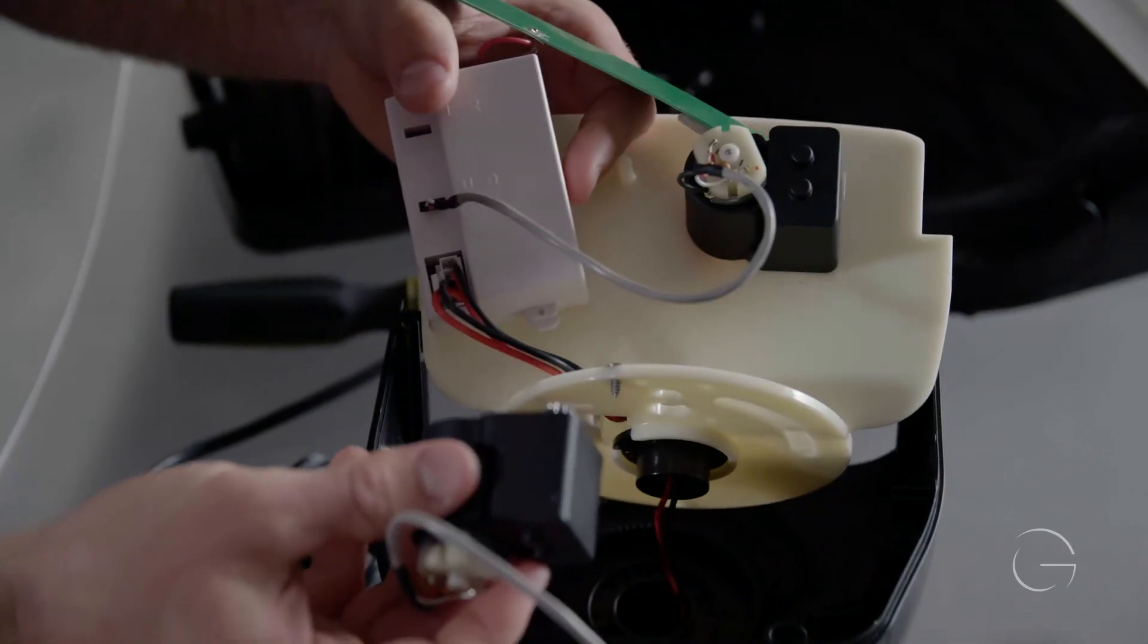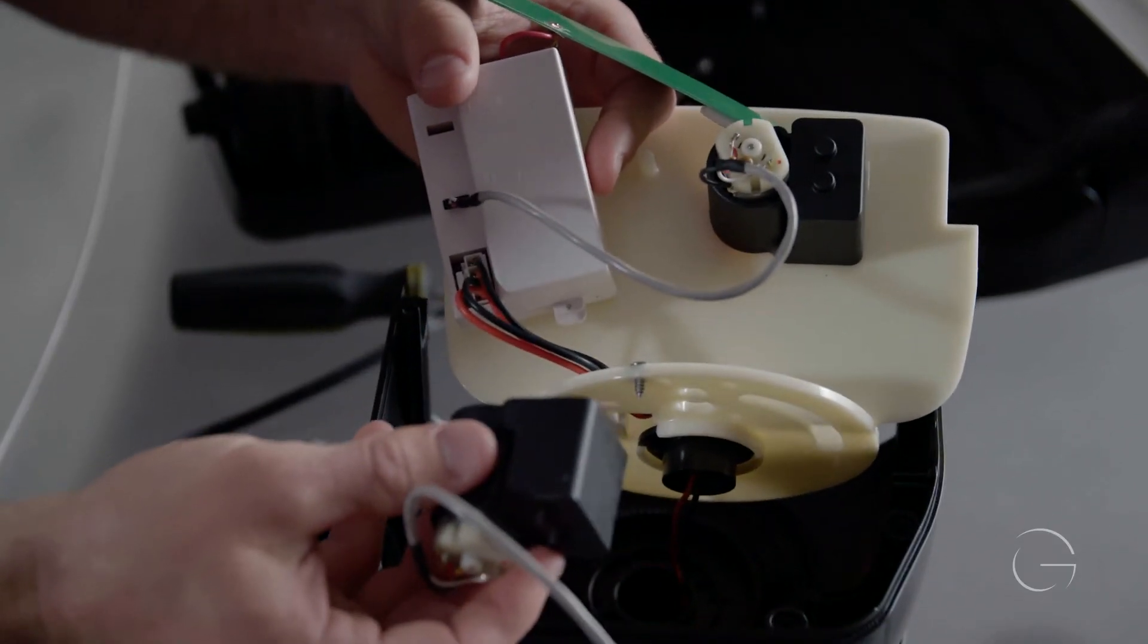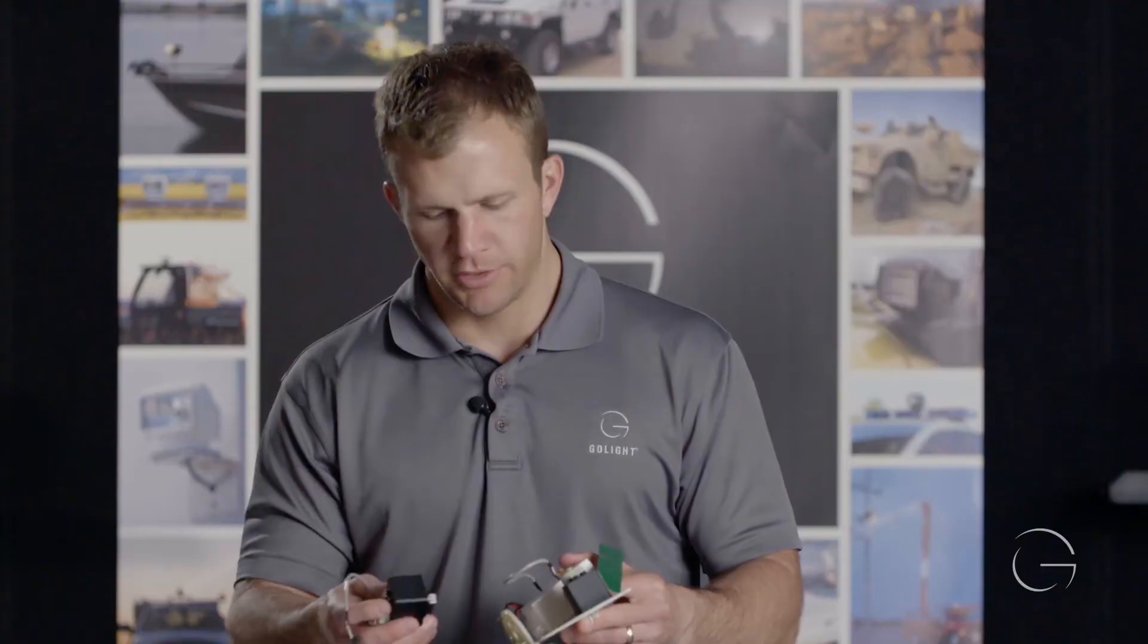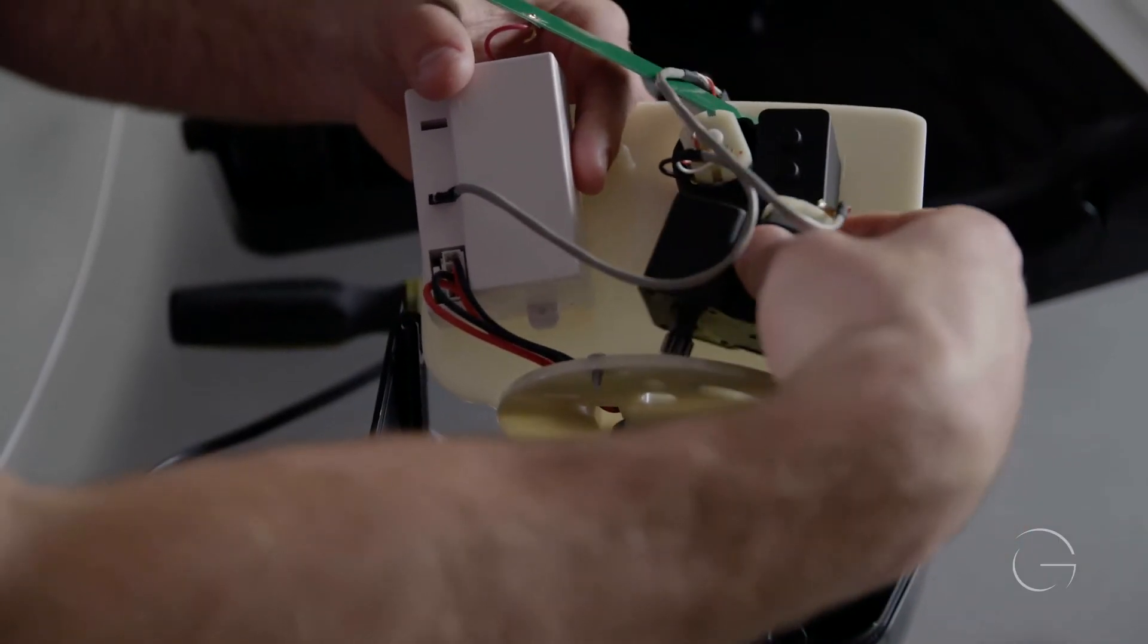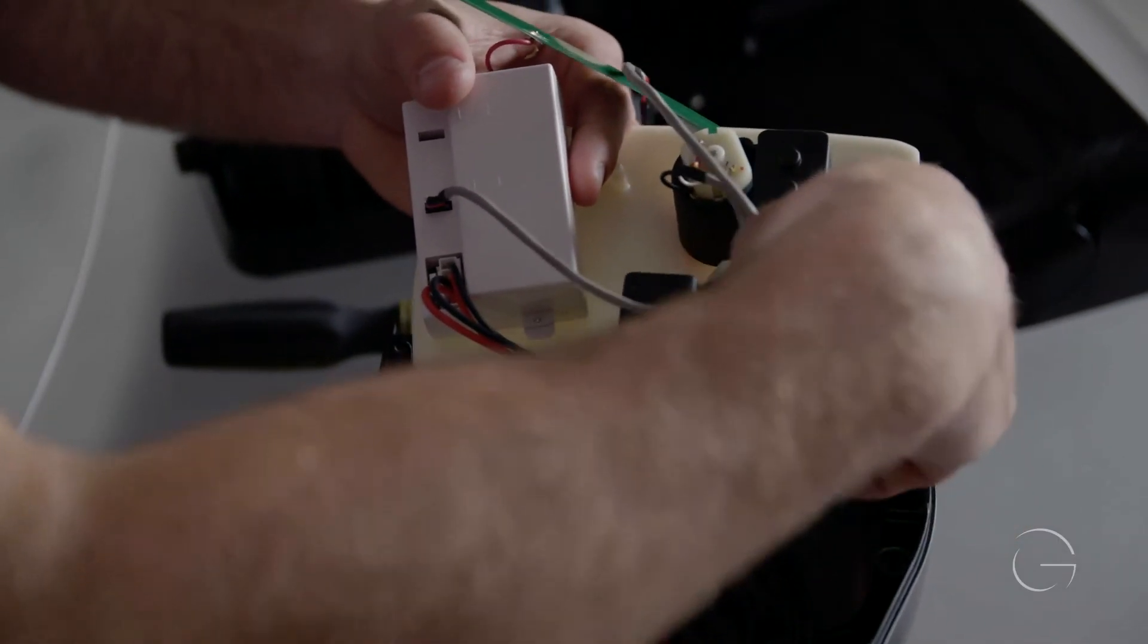Now we will replace the Go Light Radio Ray horizontal motor with the new one. To do that first we will need to place the motor back onto the bulkhead.